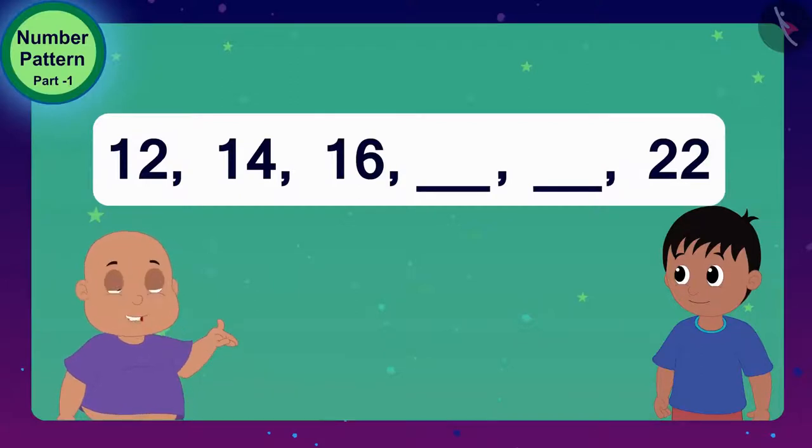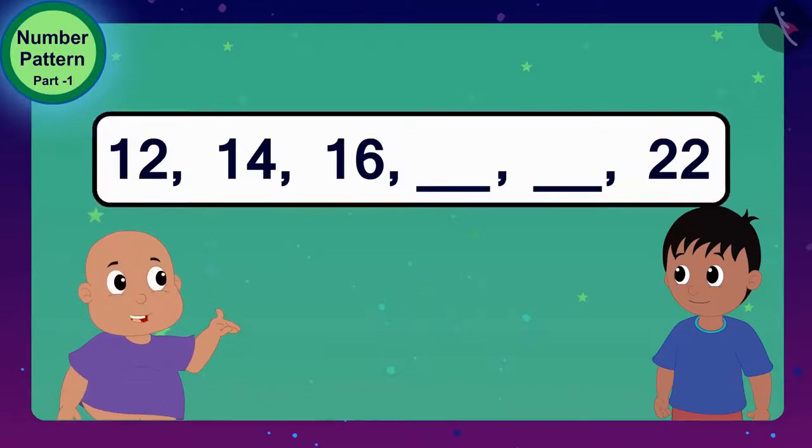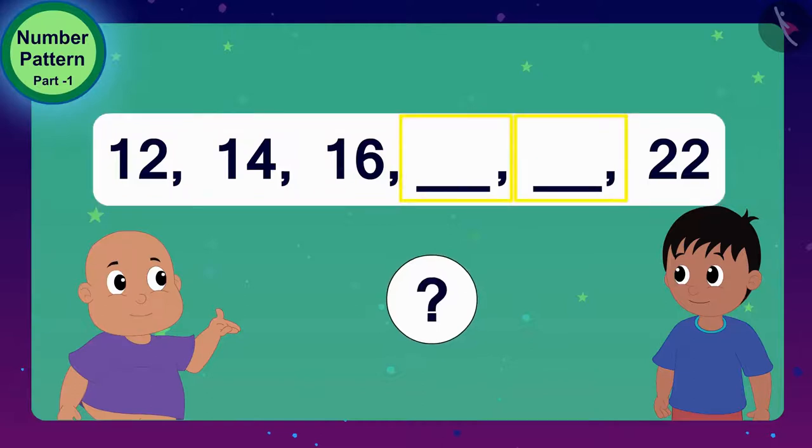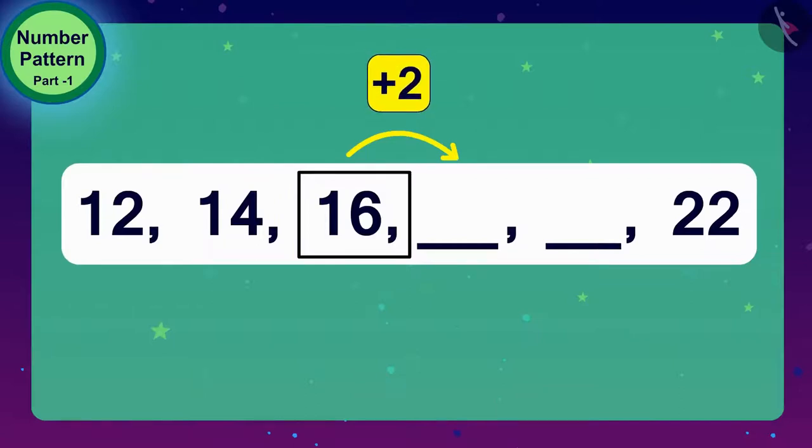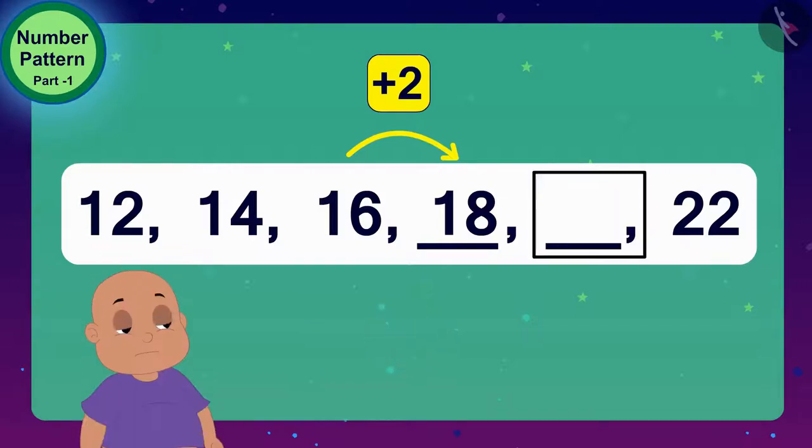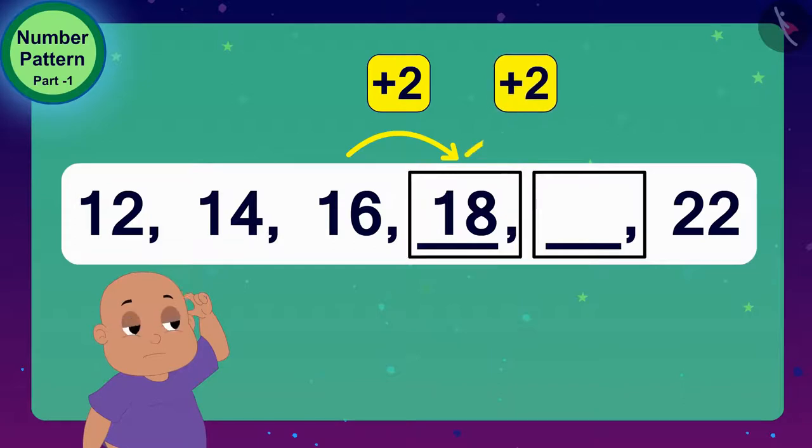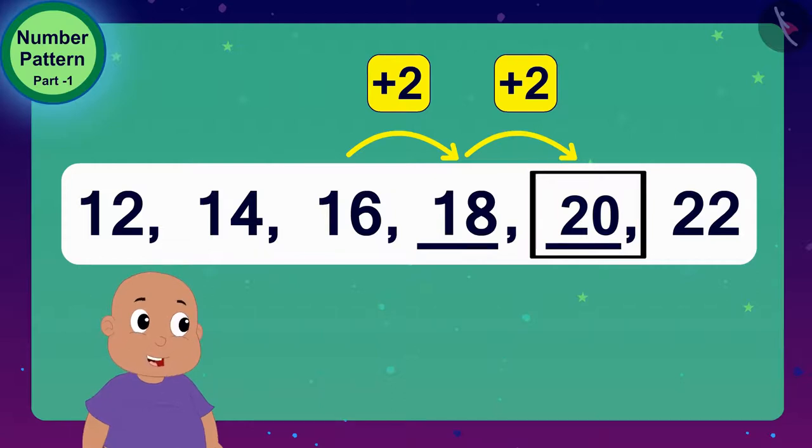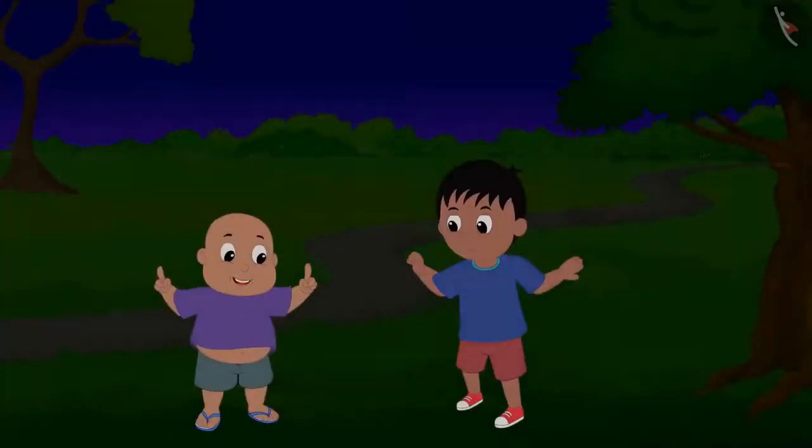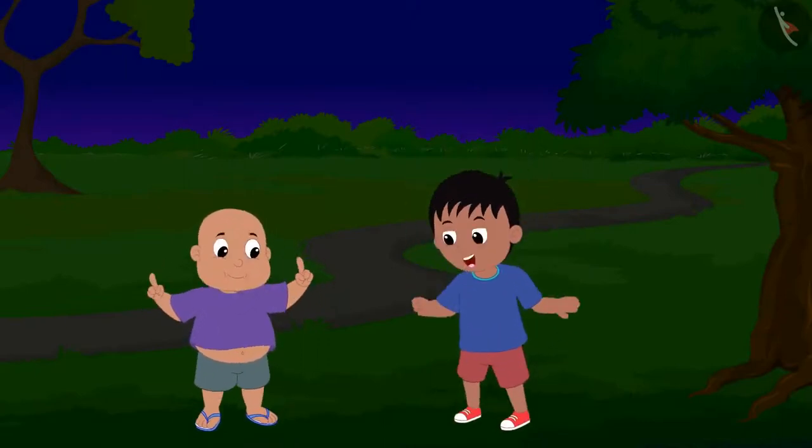So, what do we have to do to get the next number in this number pattern? We have to add 2 to 16. Done. 2 added to 16 is 18. Bablu, now can you tell what will be the next number? Hmm, add 2 to 18 and you get 20. Raju, we have solved the first riddle. Both Raju and Bablu started dancing.